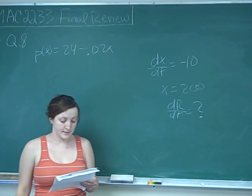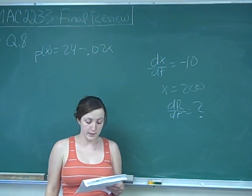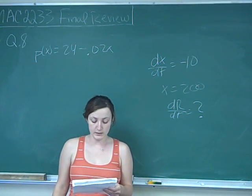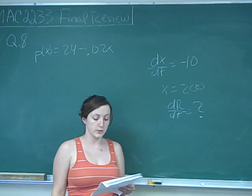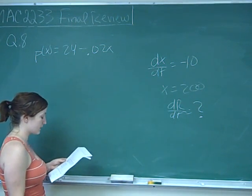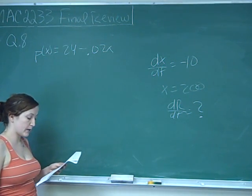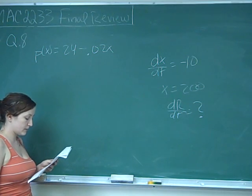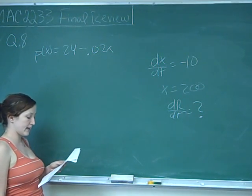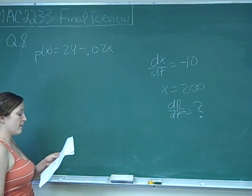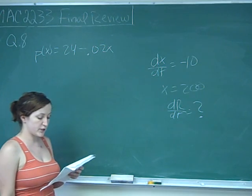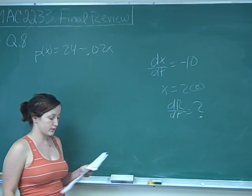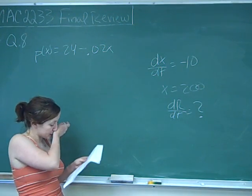This is question number 8. A company is manufacturing a new product. The demand function for the product is P of X equals 24 minus 0.02X, where P is the price per item and X is the weekly production level. If production is decreasing by 10 items per week, find the rate at which the revenue is changing with respect to time when weekly production is 200 items.